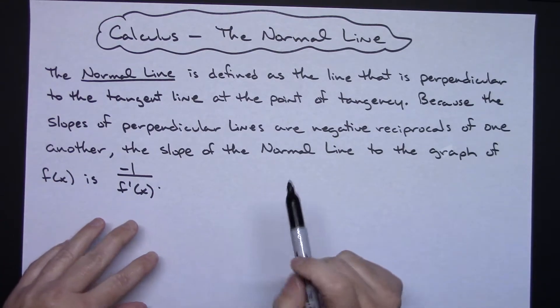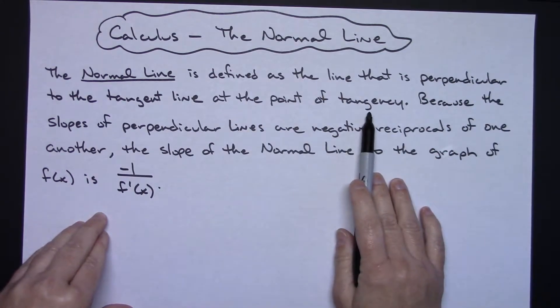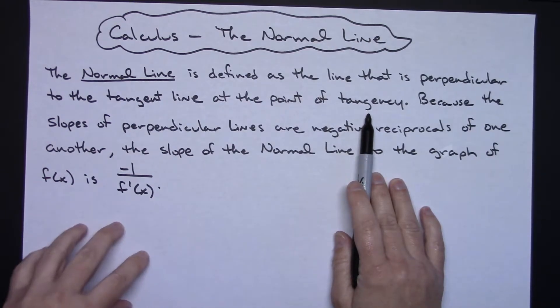The normal line is defined as a line that is perpendicular to the tangent line at the point of tangency. So you've got your tangent line and then your normal line is going to be perpendicular right there at that point of tangency.